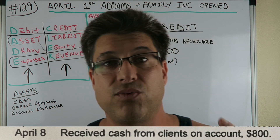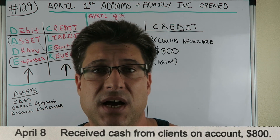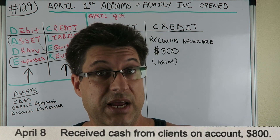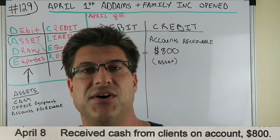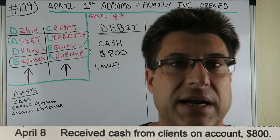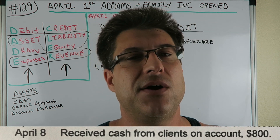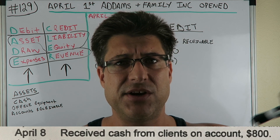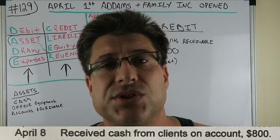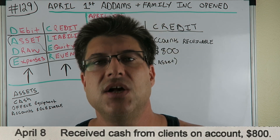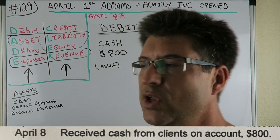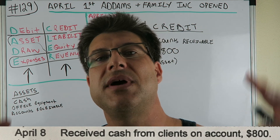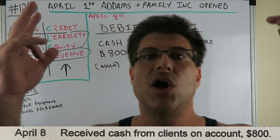This video is being posted around finals time — December 2018. Just keep studying and practicing. After doing all these journal entries, you'll know that when it says 'on account' and you're receiving money, it's accounts receivable, and accounts receivable is an asset. Keep practicing with DCA lure. This is CPA Strength — I'll see y'all tomorrow. Deuces.